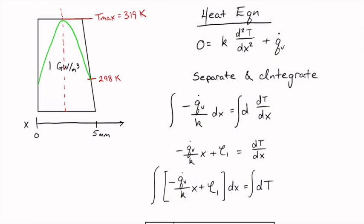So this is what happens when you have generation inside of a body. You break from that linear profile, even at steady state. What if there were no generation in the solar cell? It would just be a flat profile at 298 Kelvin, because there would be no driver for a temperature gradient. Just a small amount of generation can have a huge impact on what the temperature profile looks like through a body.